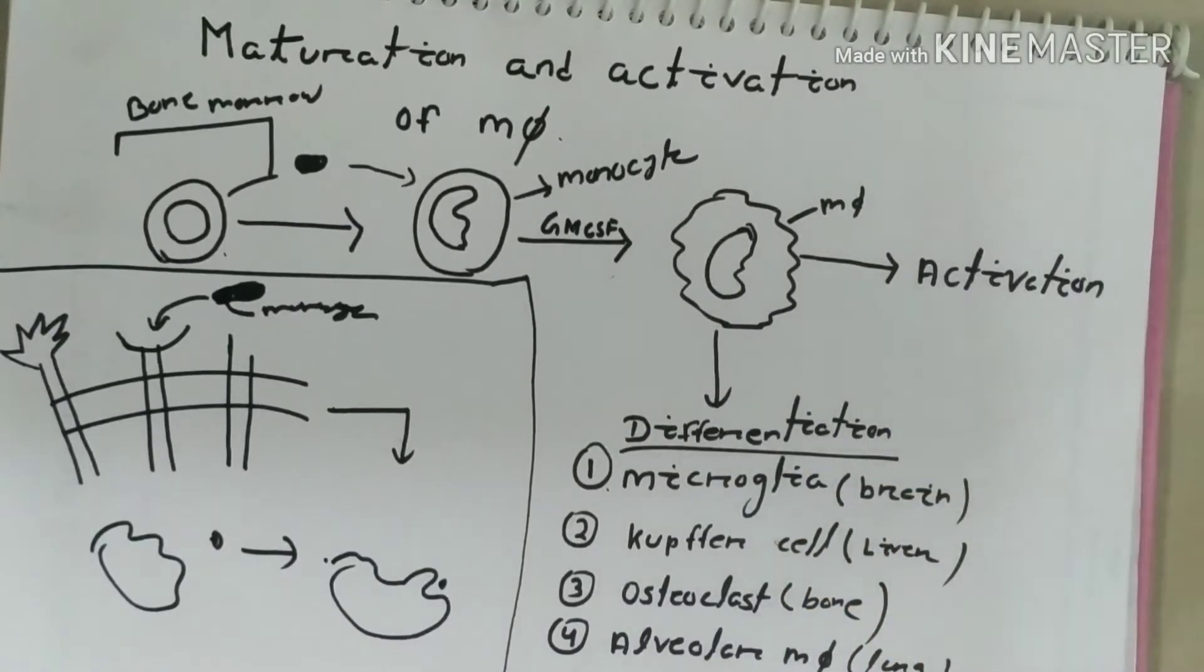Let me tell you about different types of macrophage in different organs. It is microglia or macroglia, which is formed in brain or CNS central nervous system. It is also Kupffer cell in liver, osteoclasts in bone, and alveolar macrophage in lung.